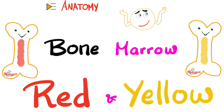Hey guys, it's Medicosis Perfection, and this is where medicine makes perfect sense, continuing our anatomy playlist. In previous videos, we talked about skin, fascia, bursa, tendons, cartilages, and bones. Today, let's dig deeper into the bone and talk about the bone marrow. We have two types of bone marrow: red marrow and yellow marrow.